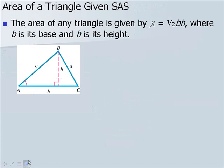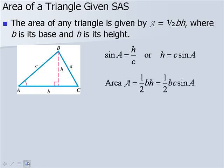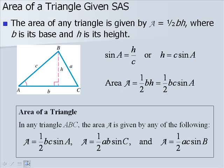The area of any triangle is given by one half base times height, where B is its base and H is its height. In the picture, sine of A equals H over C, the opposite over the hypotenuse. Solving for H gives H equals C times sine of A. Substituting, the area equals one half BC sine of A. This leads to the following formulas for the area of a triangle using each pair of sides and their included angle.